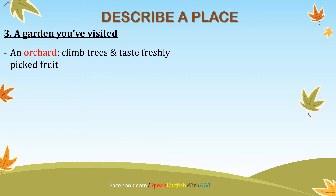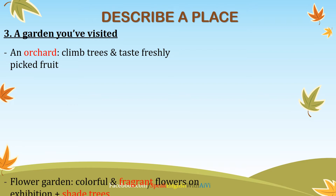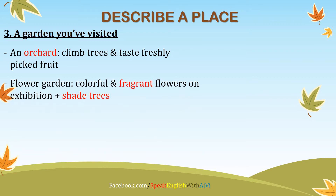There are several options. Number one, you can talk about an orchard, which is a fruit garden, and what you can do there is climbing the trees and tasting the freshly picked fruit. Another option is to talk about a flower garden with colorful and fragrant flowers on exhibition, together with a number of shade trees. Fragrant is an adjective that means having a pleasant smell, and shade trees are trees that provide shade.